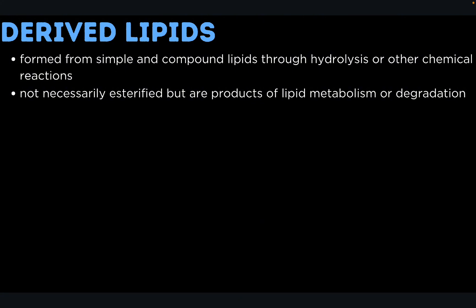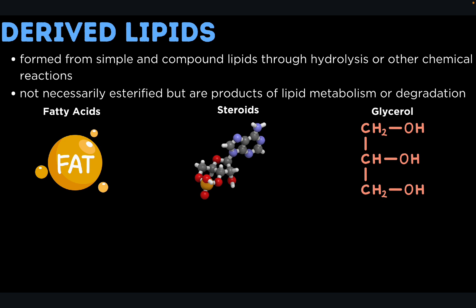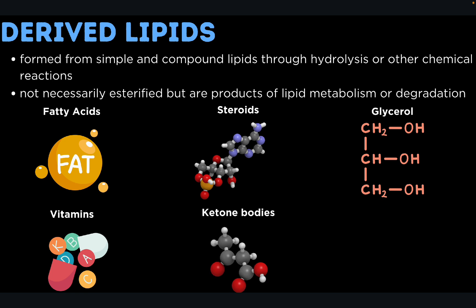Now let's go to derived lipids. Derived lipids are a category of lipids formed from simple and compound lipids through hydrolysis or other chemical reactions. Unlike simple lipids such as triglycerides and compound lipids like phospholipids, derived lipids are not necessarily esterified fatty acids; rather, they are often products of lipid metabolism or degradation. They include fatty acids, steroids such as cholesterol, glycerol, vitamins such as A, D, E, and K, ketone bodies produced from the breakdown of fatty acids especially during fasting, and long-chain alcohols like cetyl alcohol.